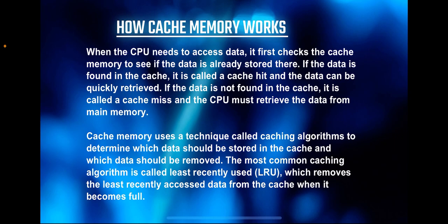Now let's dive into how cache memory works. Cache memory is an integral part of modern computer systems, designed to bridge the gap between the fast processor and the relatively slower main memory. It acts as a temporary storage space, holding frequently accessed data and instructions to speed up overall system performance. When you open a web browser to visit a website, the data and instructions needed to display it are fetched from main memory and stored in cache. The next time you navigate to a page on the same site, the processor retrieves it from the cache instead, reducing latency and improving performance.